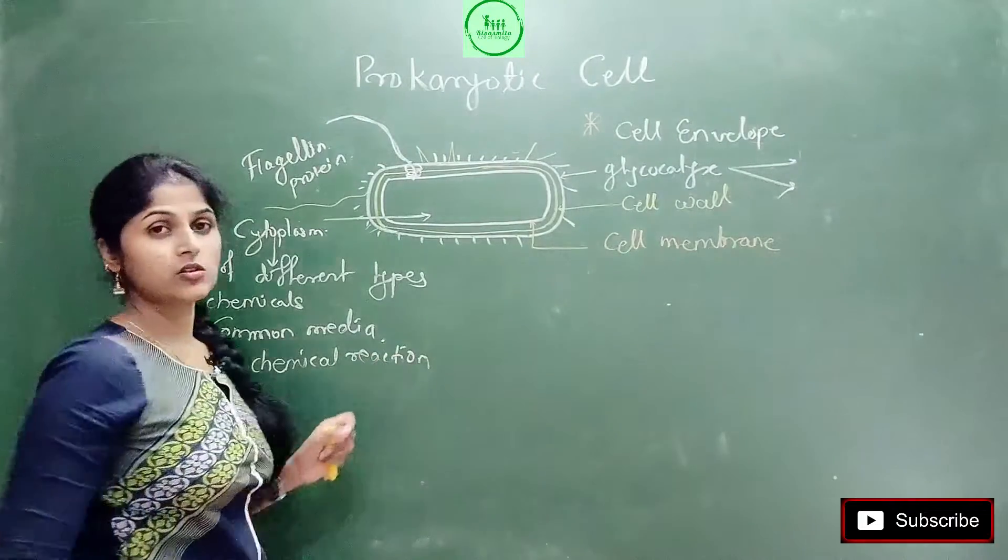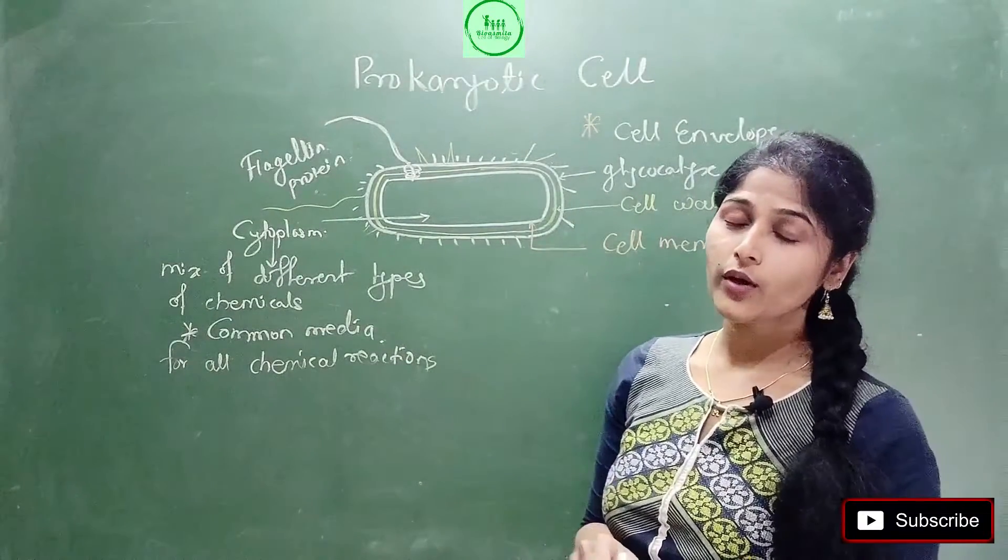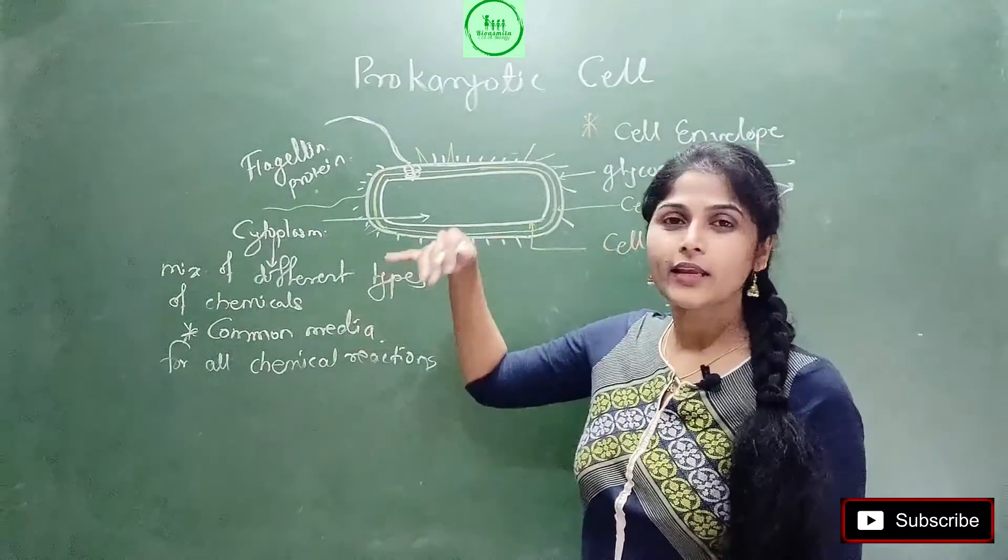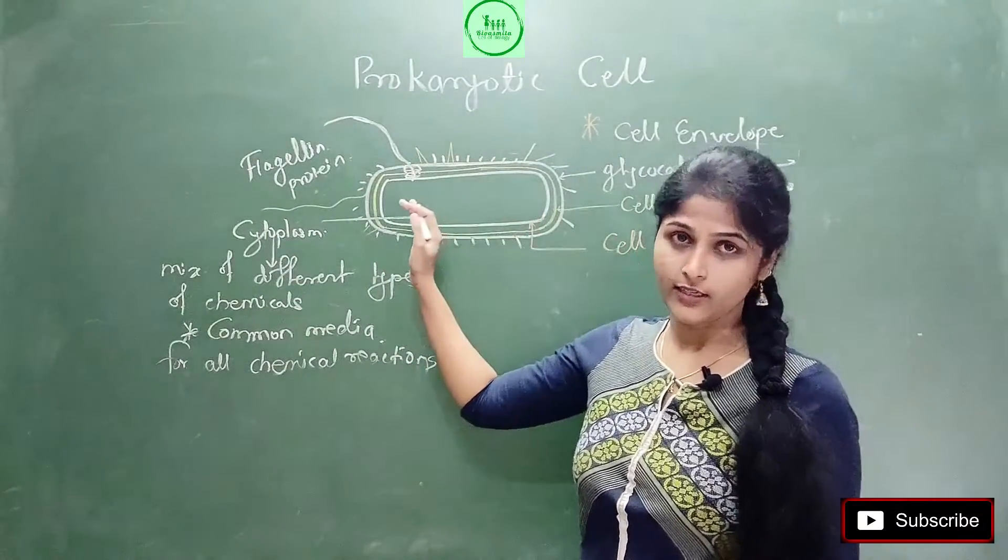So you can say cytoplasm is the common place or common media for all chemical reactions. In the bacteria's body, in the bacterial cell, whatever reactions will happen, all those reactions will happen where? In cytoplasm. Why? Because organic, inorganic, whatever type of chemicals are there, those all are present here.